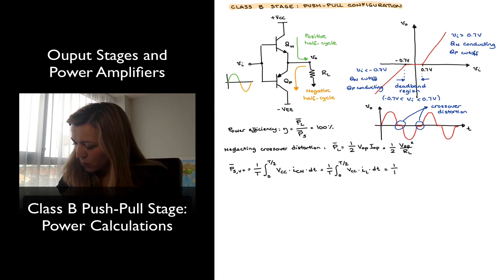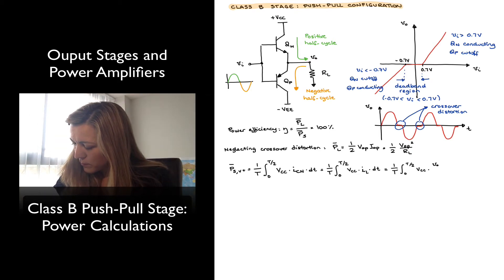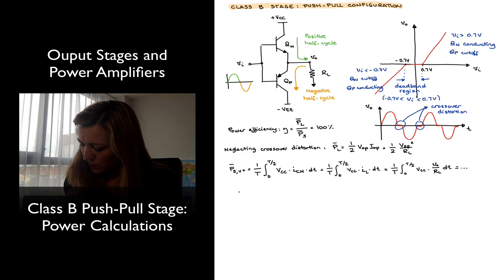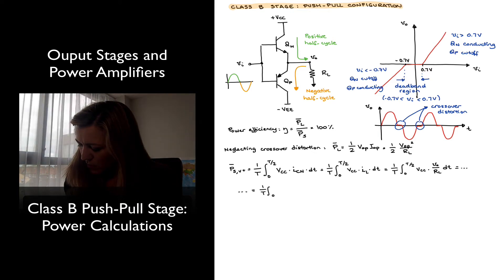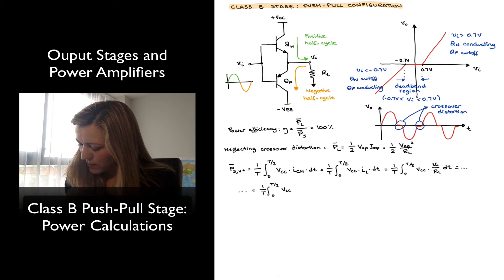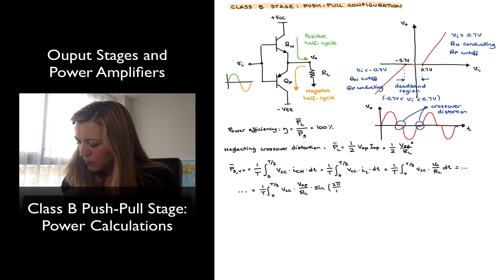So doing this in two steps: 1 over T, times VCC times VOP divided by RL times dt — which becomes 1 over the period, times the integral from 0 to T/2 of VCC times VOP divided by RL times the sine of ωT, where ω can be expressed as 2π over the period, times dt.